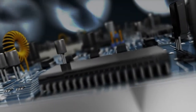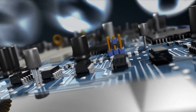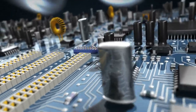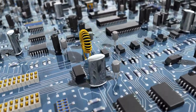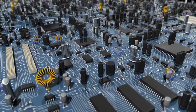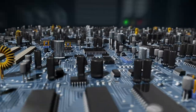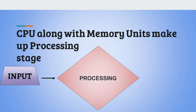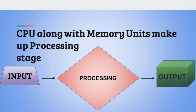In between the input and output, there is the crucial step of processing. This is where the magic happens. Processing takes place in the central processing unit, or the CPU. The CPU uses the instructions given to it by the user along with the stored instructions in its memory to give a result. We could say that the CPU along with the memory units make up the processing stage in the working of a computer.